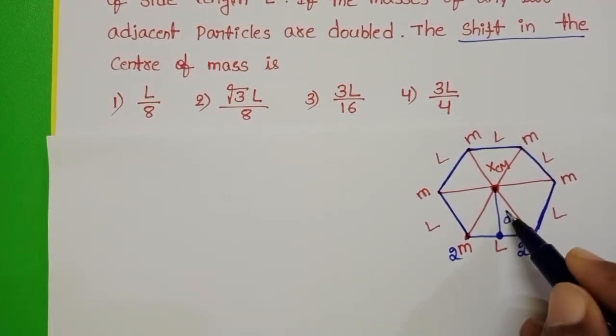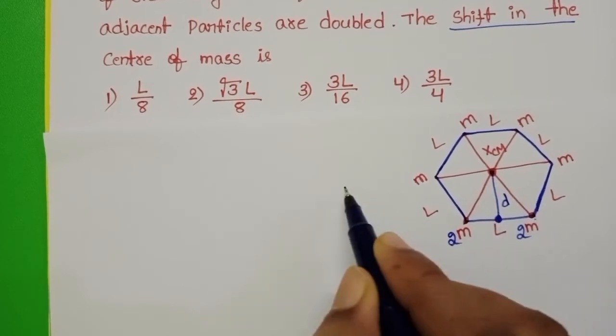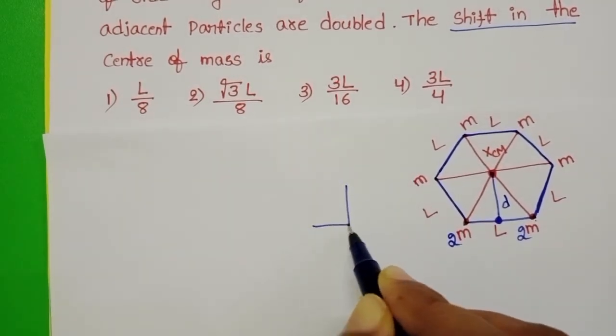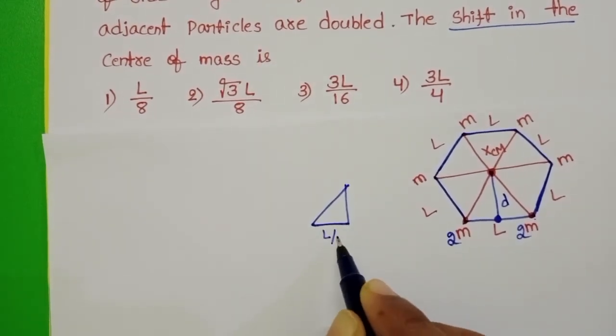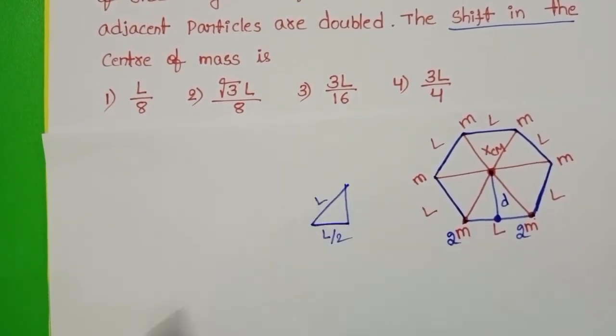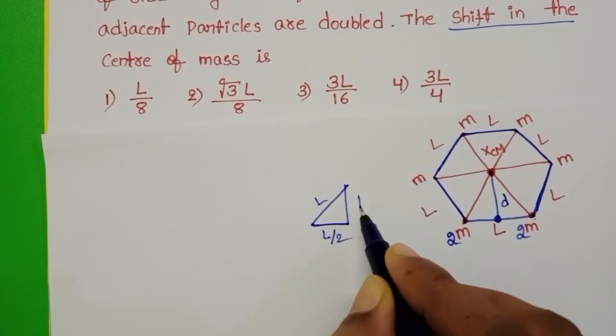Let it be D. This is like a right angle triangle. This length is L/2 and this length is L. Let it be D.